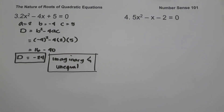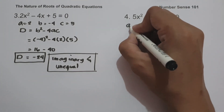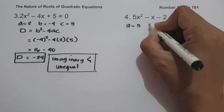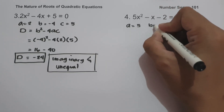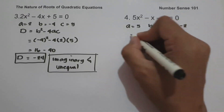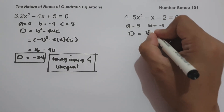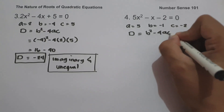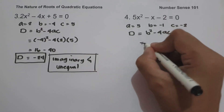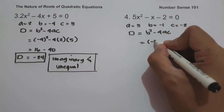On number 4, we have 5x squared minus x minus 2 equals 0. So let us have the value of a, that is 5, b is negative 1, and c is negative 2. And the formula for the discriminant is d equals b squared minus 4ac. The value of b is negative 1.